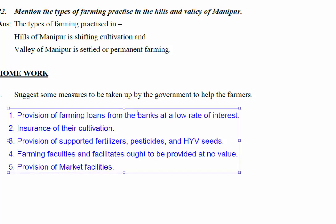Suggest measures to be taken by the government to help farmers. First, provision of farming loans from banks at low interest. Second, insurance of their cultivation so farmers can insure their crops against natural disasters like floods or drought. Third, provision of subsidized fertilizers, pesticides, and high-yielding variety of seeds. Fourth, farming facilities should be provided at no cost. Fifth, provision of market facilities — also very important.